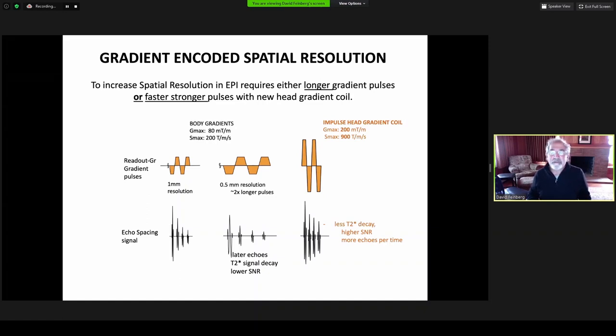This leads us to why we want a stronger, higher, powerful gradient system. The net gradient area can be doubled using taller pulses instead of longer pulses. Therefore, there's less T2-star decay, higher signal-to-noise in all the signals, and more echoes per unit time.